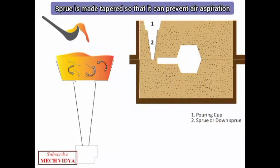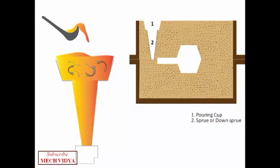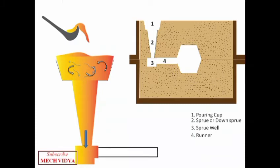Now connected to the sprue is the sprue well. This sprue well is our final attempt to reduce and nullify any remaining turbulence in the molten metal. When the molten metal flows into the well from the sprue, it settles down here and from this section it moves into the runner in a perfectly laminar manner.